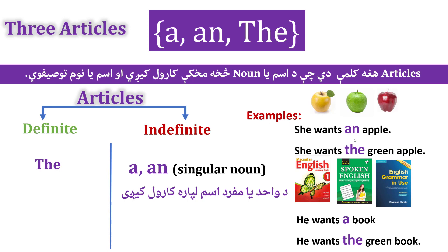Example: She wants an apple. He wants a book. He wants a green book.